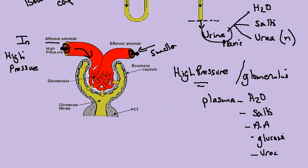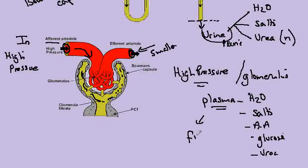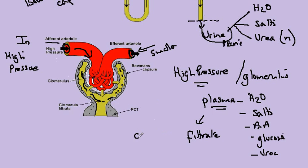So these are all forced out of the blood vessel and into this space here, which is the inside of the Bowman's capsule. When the plasma is forced into the Bowman's capsule, we change the name of this, and we call this filtrate.